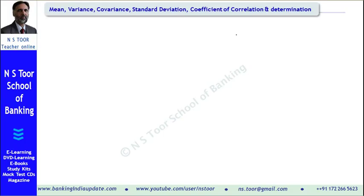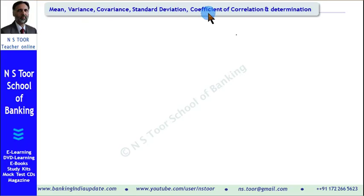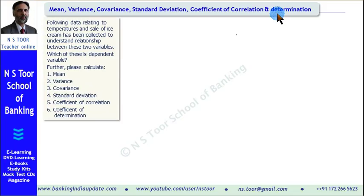Hello friends. In this video, we shall try to learn the basic concepts or basic tools which are used in statistics. These tools include mean, variance, covariance, standard deviation, coefficient of correlation, and coefficient of determination. This we shall learn by way of an example. Following data relating to temperatures and sale of ice cream has been collected to understand the relationship between these two variables.